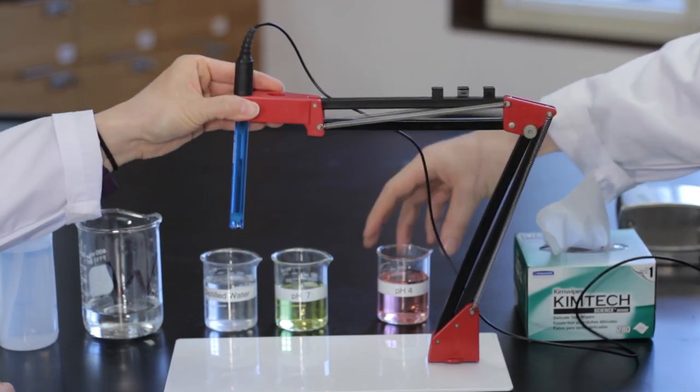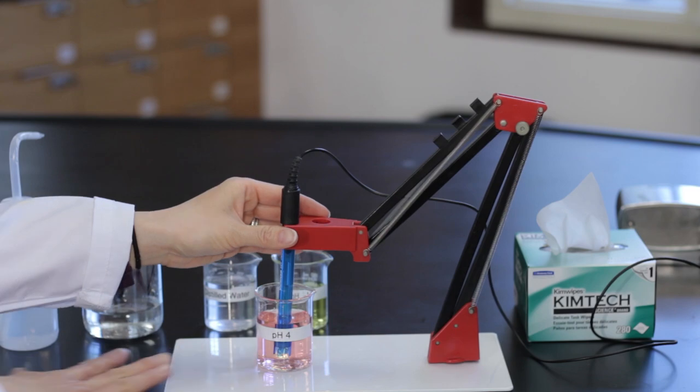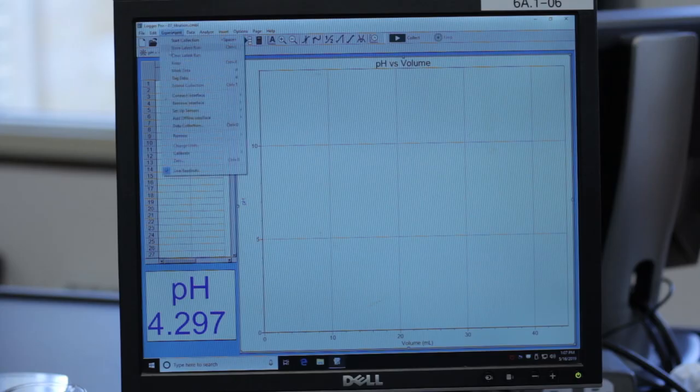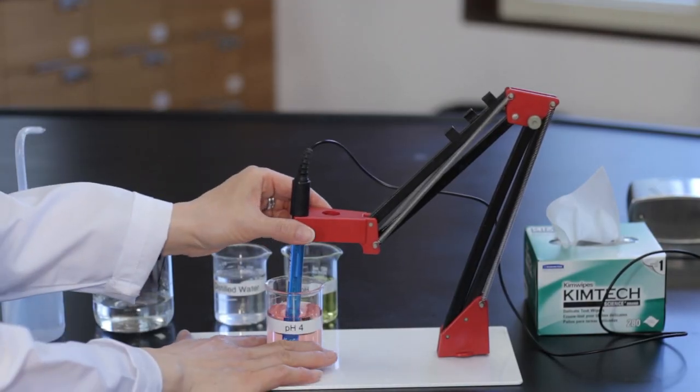Carefully insert the pH sensor into the pH 4 buffer solution, allowing about 2 centimeters clearance above the bottom of the beaker. Click on experiment, choose calibrate, then click on the LabQuest Mini 1 CH1 pH tab. Click on calibrate now. The pH value in the box is not active while calibrating the sensor. Wait for 10 seconds, then set value 1 to 4.0. Click on keep and rinse the pH sensor with distilled water.